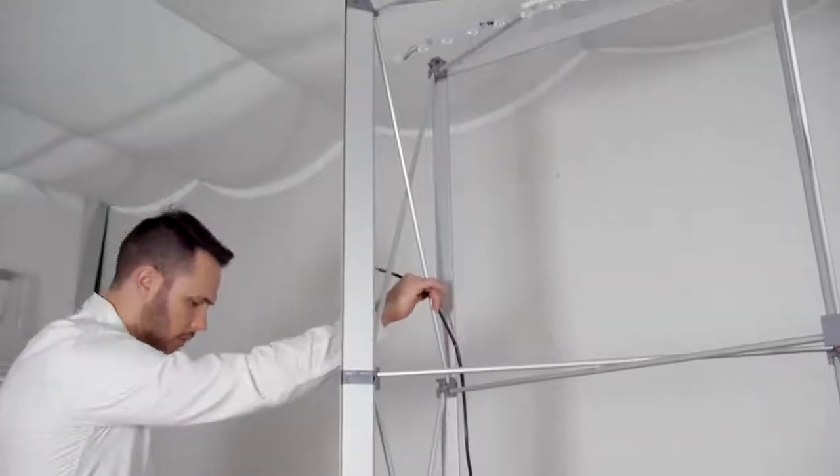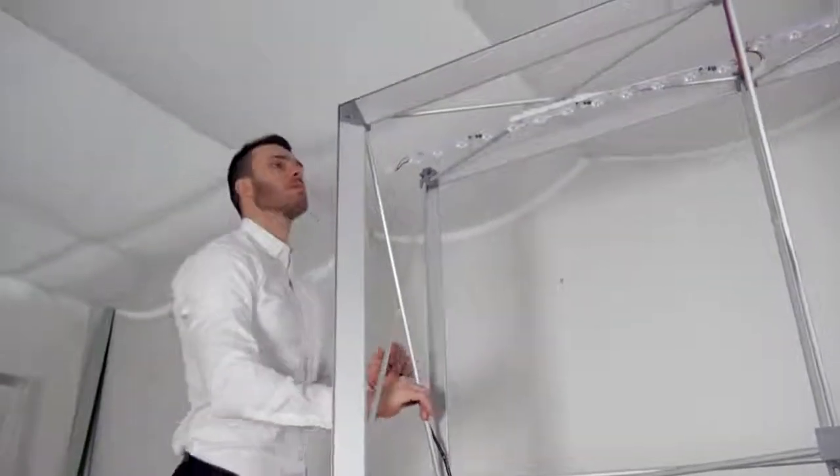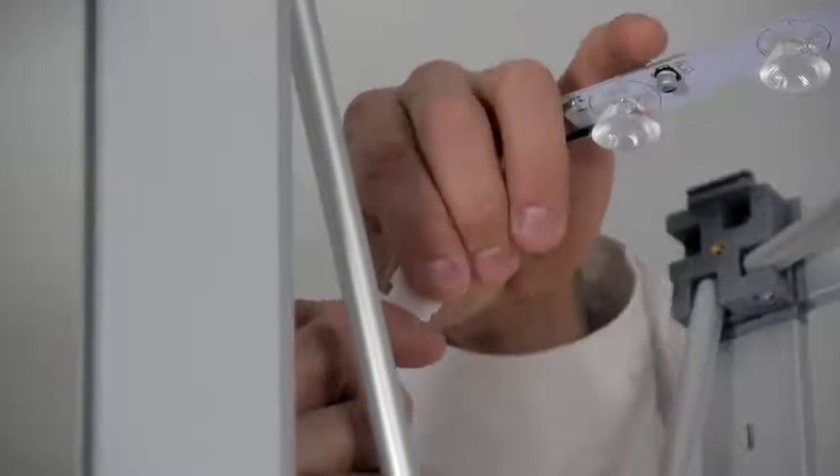Connect the long extension cord to the female end of the top right strips in series. Run the long extension cord down the side.